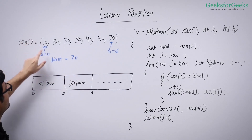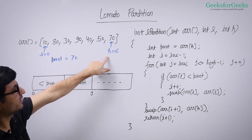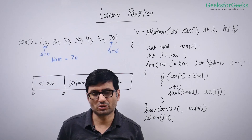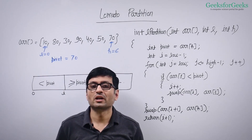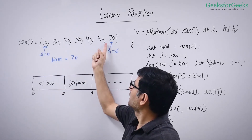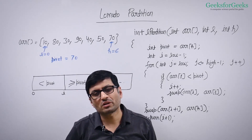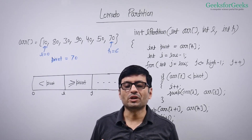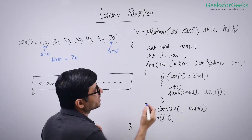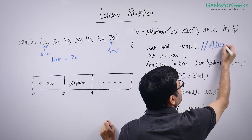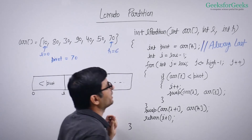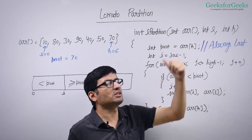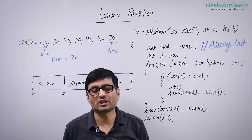Let's take a look at this array — we have been given a low index and a high index. Unlike the previous video where pivot was given as an input parameter, here we are going to assume the pivot is always the last element. We'll talk about a modification when the pivot is not the last element, but for simplicity we assume pivot is always the last element.